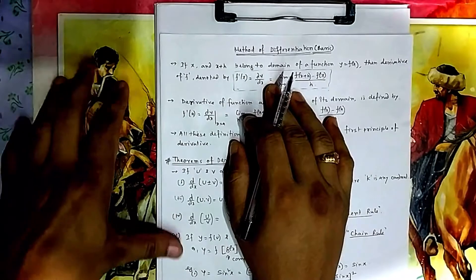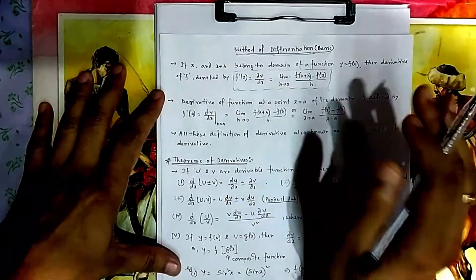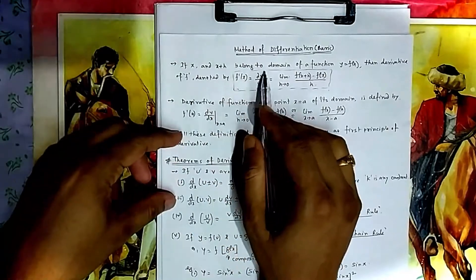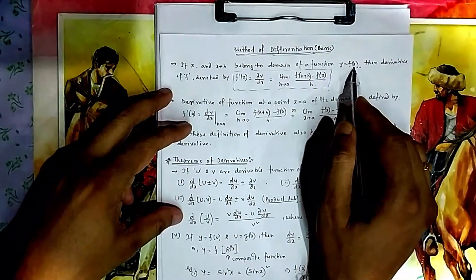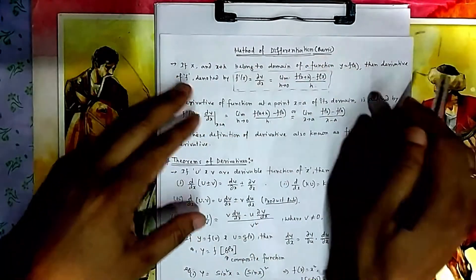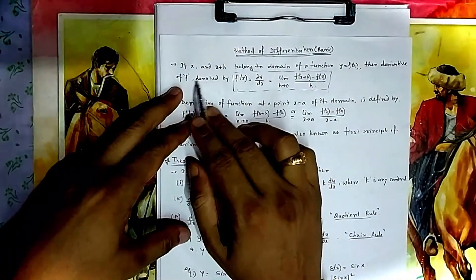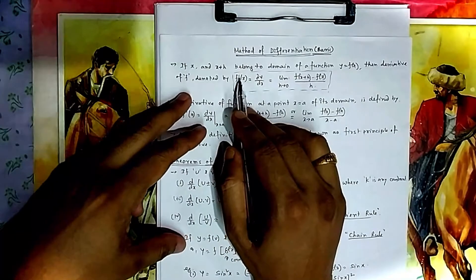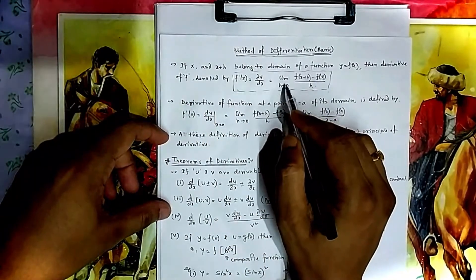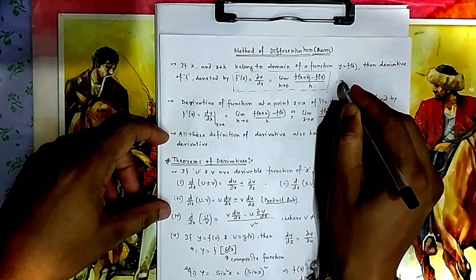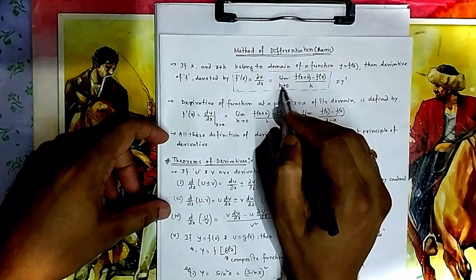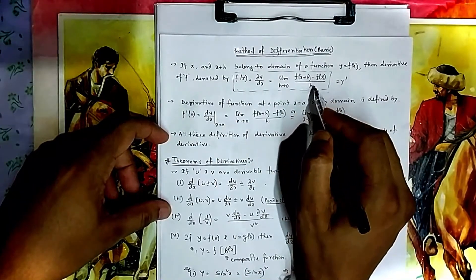This is the basic definition which we have already seen in case of differentiability. If x and x plus h, where h is a very small number belonging to the domain of the function y = f(x), then the derivative of f, denoted by f'(x), dy/dx, or y', is equal to the limit as h tends to 0 of [f(x+h) - f(x)] / h.